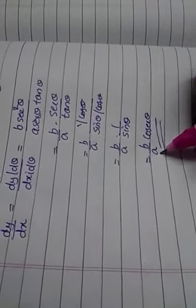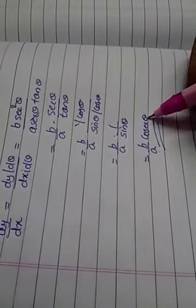So, the answer will be b/a × cosec θ. So, dy/dx is b/a × cosec θ and it is in the parameter θ.